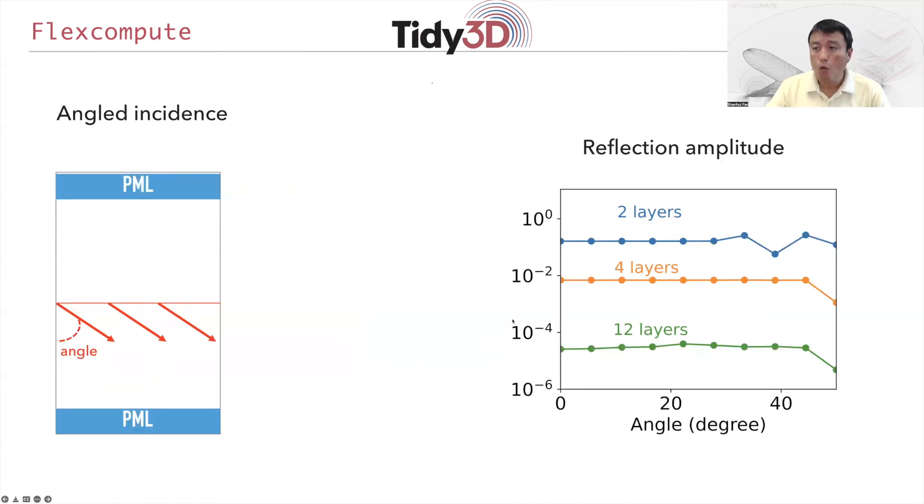As I mentioned, one of the great things about PML is that it gives angle independent attenuation. So in this case, here is a computation where you look at the reflection amplitude for 2, 4, and 12 layers as a function of angle of incidence going all the way from 0 to 40 degrees. You see that the 12 layer, of course, has much better reflectivity, a much lower reflectivity compared with the two layer case. And also you can see that it is very flat as a function of angle. This is one of the results that we have argued analytically that you can see from numerical simulation as well.